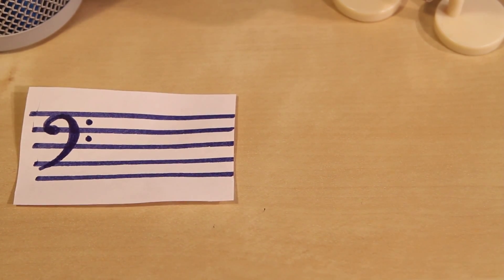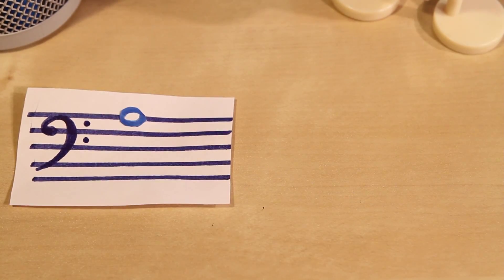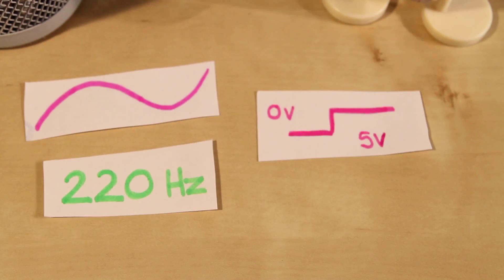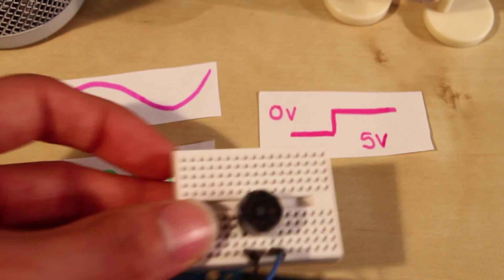If you know a thing or two about the physics of music, you'll know that each note is a specific frequency. We can generate this frequency by quickly sending 5 volts or 0 volts to our buzzer here.